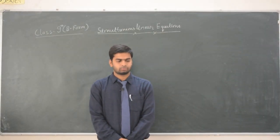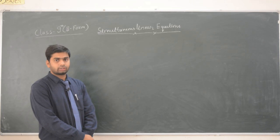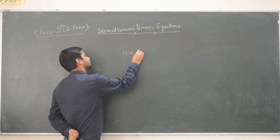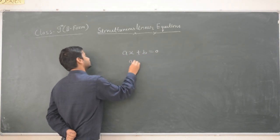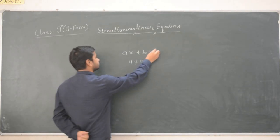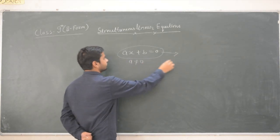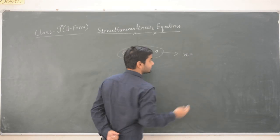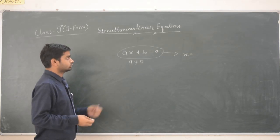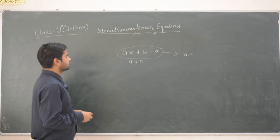Hello everyone, today we are going to see the chapter on simultaneous linear equations. In your previous classes you have already seen that equations like ax plus b equal to 0, where a is not equal to 0, are called linear equations in one variable. This type of equation always gives a unique solution — a single value of x. The solving techniques for these equations you have already covered in previous classes.